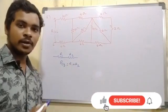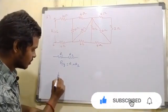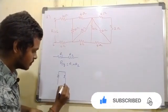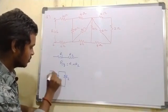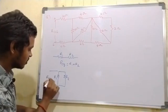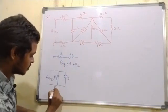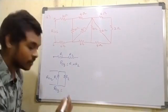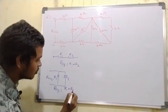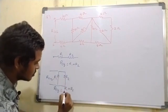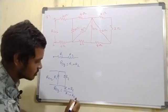Now we will find out the parallel resistance. For R1 and R2 in parallel, the equivalent resistance R_eq is equal to R1 multiplied by R2, divided by the sum of the two resistances, R1 plus R2.